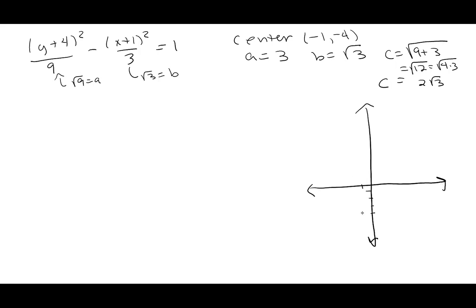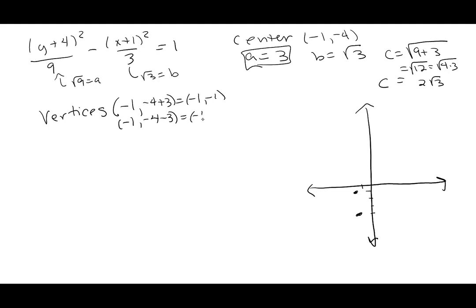Starting with center (-1, -4). Since y is first, we go up and down by a = 3. The vertices are (-1, -4+3) = (-1, -1) and (-1, -4-3) = (-1, -7). The foci are at (-1, -4 + 2√3) and (-1, -4 - 2√3), going from the center up and down by c.